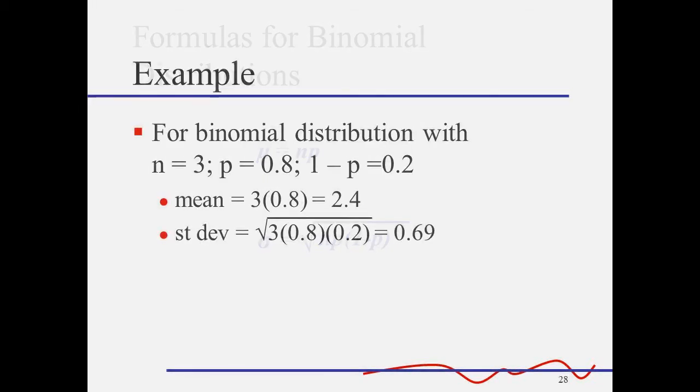So what about our example? If we flip that weighted coin three times, and we do it over and over thousands of times out of three flips, how many heads will we get on average? The mean is n times p, so we have 3 times 0.8, which is 2.4. And the standard deviation is 0.69.